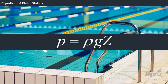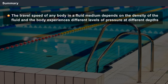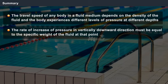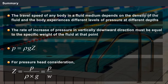Thus, the pressure, density and depth relationship equation is used in calculating the data in static water structures. Let us sum up. The travel speed of any body in a fluid medium depends on the density of the fluid, and the body experiences different levels of pressure at different depths. The hydrostatic law states that the rate of increase of pressure in the vertically downward direction must be equal to the specific weight of the fluid at that point. The pressure-density-height relationship of fluids is expressed by P equals rho into G into Z. For pressure head consideration, Z equals P divided by rho into G, which is equal to P by W.